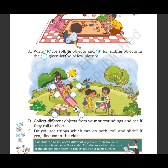Write R for rolling objects and S for sliding objects in the circle given in the picture. First let us discuss: what is the difference between roll and slide? Any shape that is round will roll. Any shape whose surface is flat will slide. Let me repeat — a shape that is round will roll; a shape whose surface is flat will slide.